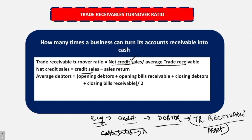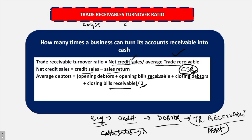Net credit sales here is credit sales minus sales return. Average trade receivables are calculated as: opening debtors plus opening bills receivable plus closing debtors plus closing bills receivable, divided by 2. You need to remember this. The acronym for trade receivable turnover ratio is CSR — where CS is credit sales and R is receivable or debtors. For inventory turnover ratio, you can use COGSI — cost of goods sold upon average inventory.